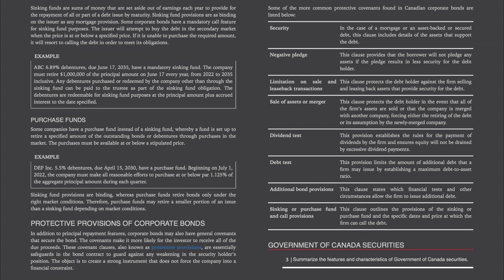The debentures are redeemable for sinking fund purposes at the principal amount plus accrued interest. Purchase funds: some companies have a purchase fund instead of a sinking fund, whereby a fund is set up to retire a specified amount of outstanding bonds or debentures through market purchases at or below a stipulated price. Example: DEF Inc. 5.5% debentures due April 15, 2030 have a purchase fund — beginning July 1, 2022, the company must make all reasonable efforts to purchase at or below par 1.125% of the aggregate principal amount during each quarter. Sinking fund provisions are binding, whereas purchase funds retire bonds only under the right market conditions.